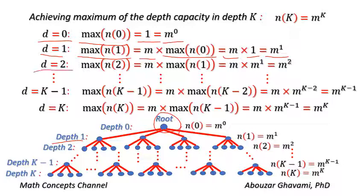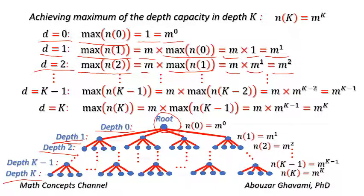Following this inductive approach, to achieve maximum capacity at each depth, each node in depths 0 to K-1 must have exactly M children. In this case, the maximum capacity of nodes at depth K equals M times M to the power of K-1, which equals M to the power of K. That is the maximum capacity of depth K.